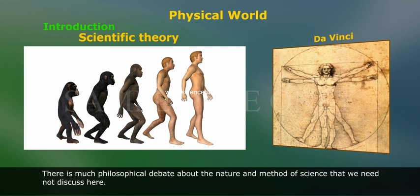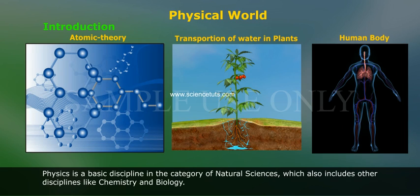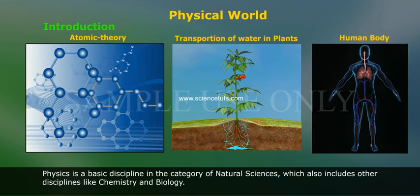There is much philosophical debate about the nature and method of science that we need not discuss here. Physics is a basic discipline in the category of natural science, which also includes other disciplines, like chemistry and biology.